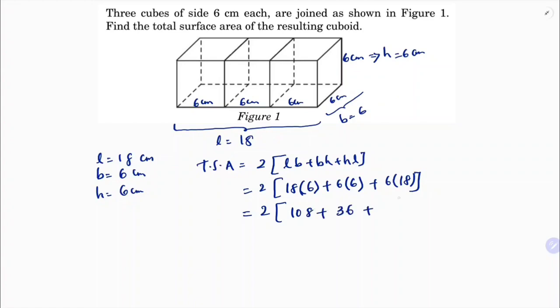36, and 6 into 18 is 108. So 108 plus 36 plus 108 equals 252. Then 2 times 252 is 504. Therefore, the total surface area of the resulting cuboid is 504 square centimeters.